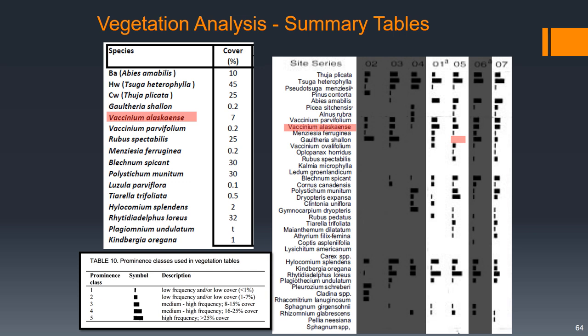Alaskan blueberry we had 7%, so that corresponds with 5 or 7. Red huckleberry just 0.2%, so barely present. That's closer to the reference for site association 5.